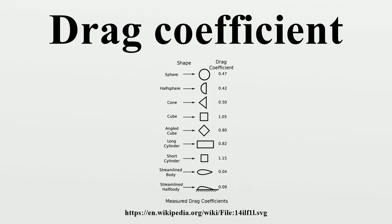The drag coefficient is defined as: where F_D is the drag force, which is by definition the force component in the direction of the flow velocity; ρ is the mass density of the fluid; u is the flow speed of the object relative to the fluid; and A is the reference area.